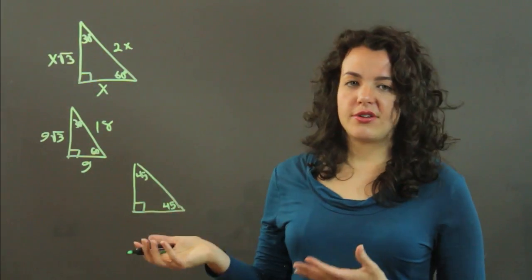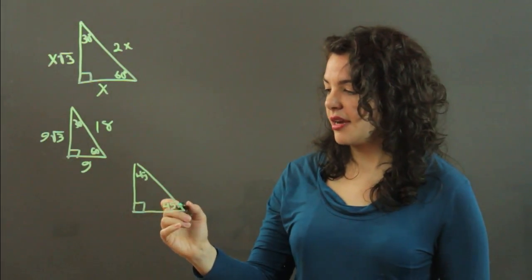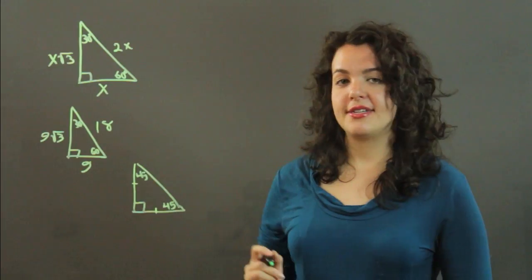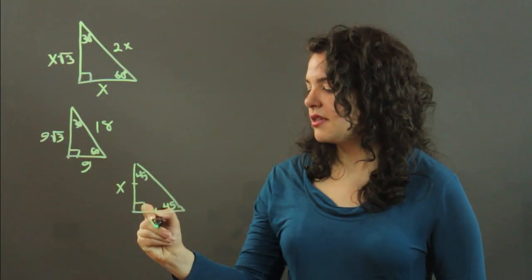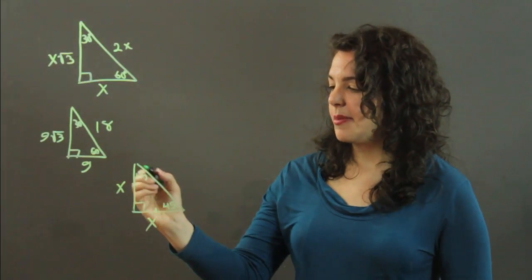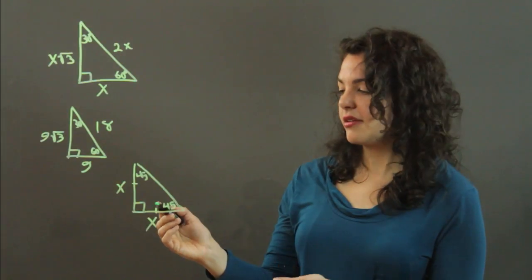Now, you may notice that this is an isosceles triangle. It has two congruent angles. So, it's going to have two congruent sides. And if each of the congruent sides is called x, then the hypotenuse, which again, it's the longest side, so it's the side opposite our 90 degree angle, is going to be x root 2.